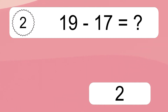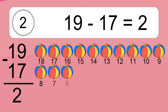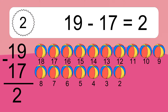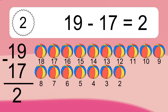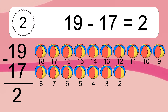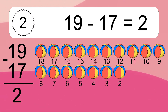19 minus 17 equals what? 19 minus 17 equals 2. Let's count it: 18, 17, 16, 15, 14, 13, 12, 11, 10, 9, 8, 7, 6, 5, 4, 3, 2.